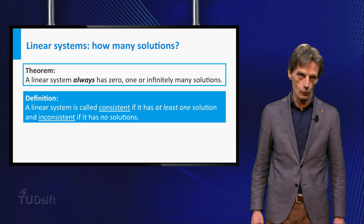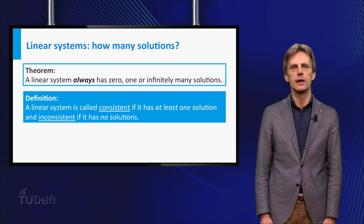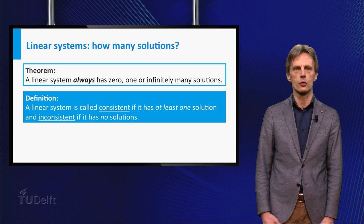A linear system with at least one solution is called consistent, and a linear system with no solutions is called inconsistent.